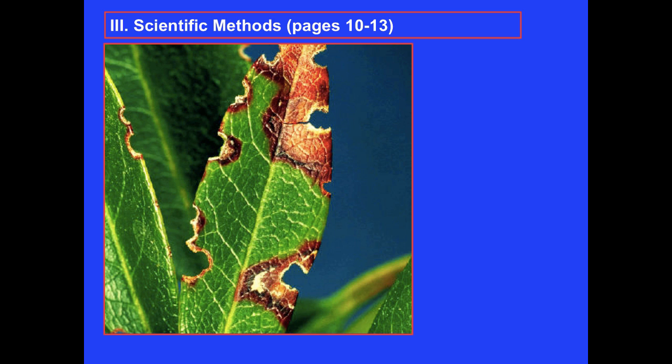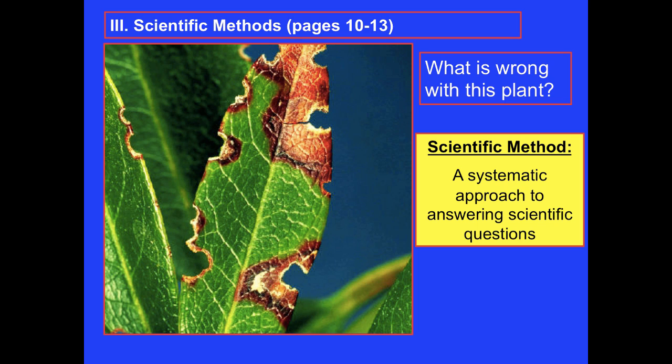We'll begin by reviewing the scientific method, which you should be very familiar with from previous science classes. Scientists usually complete experiments to find solutions to problems. Take for example this plant—it's clearly unhealthy. A scientist might begin by asking, what's wrong with this plant? To answer this question, scientists use a systematic approach known as the scientific method.